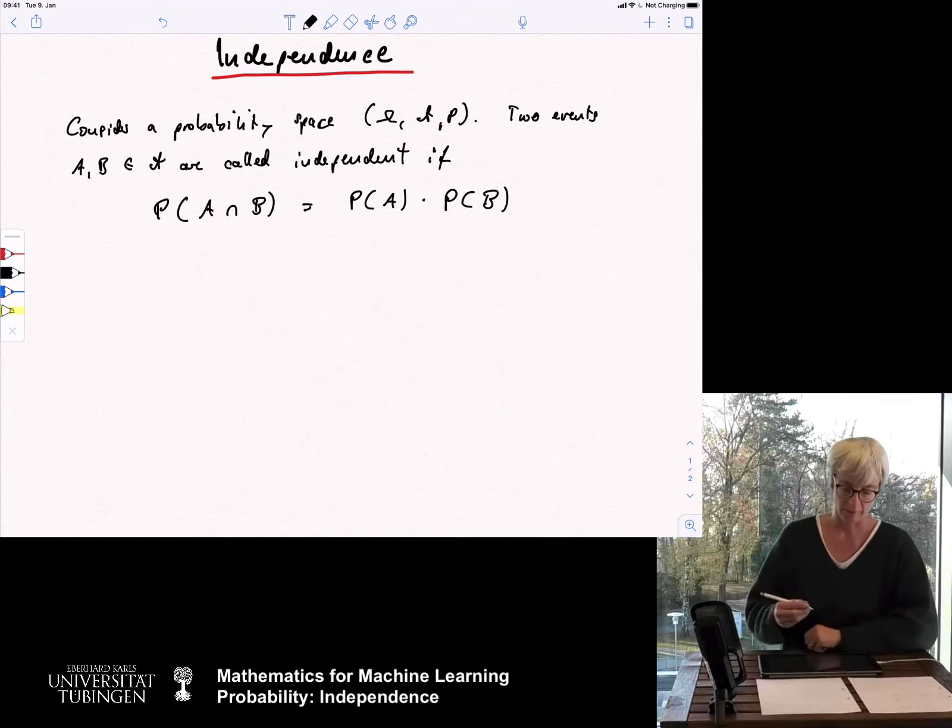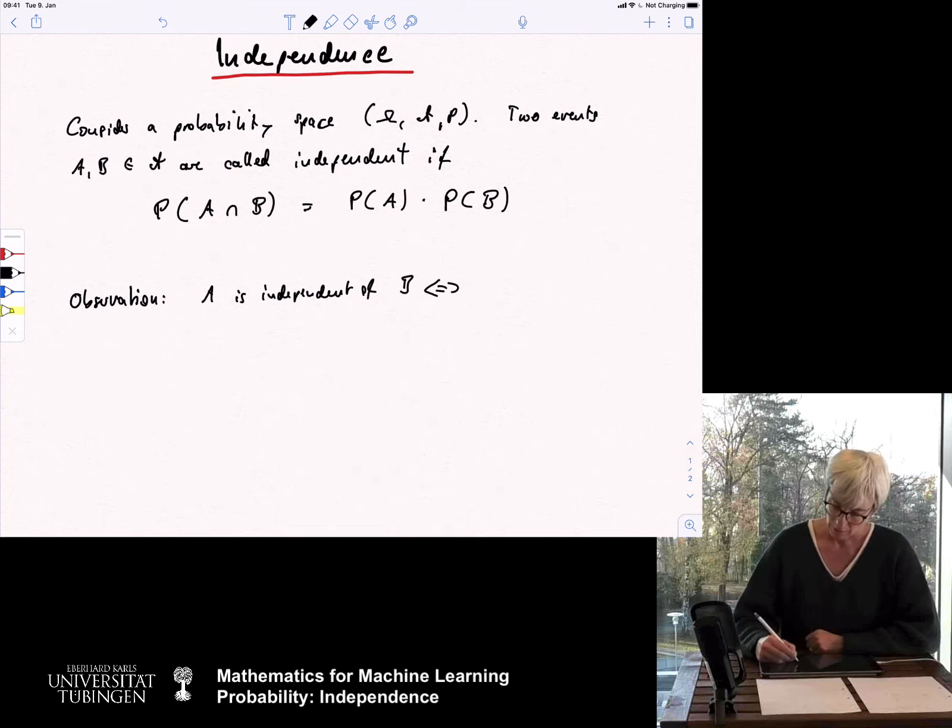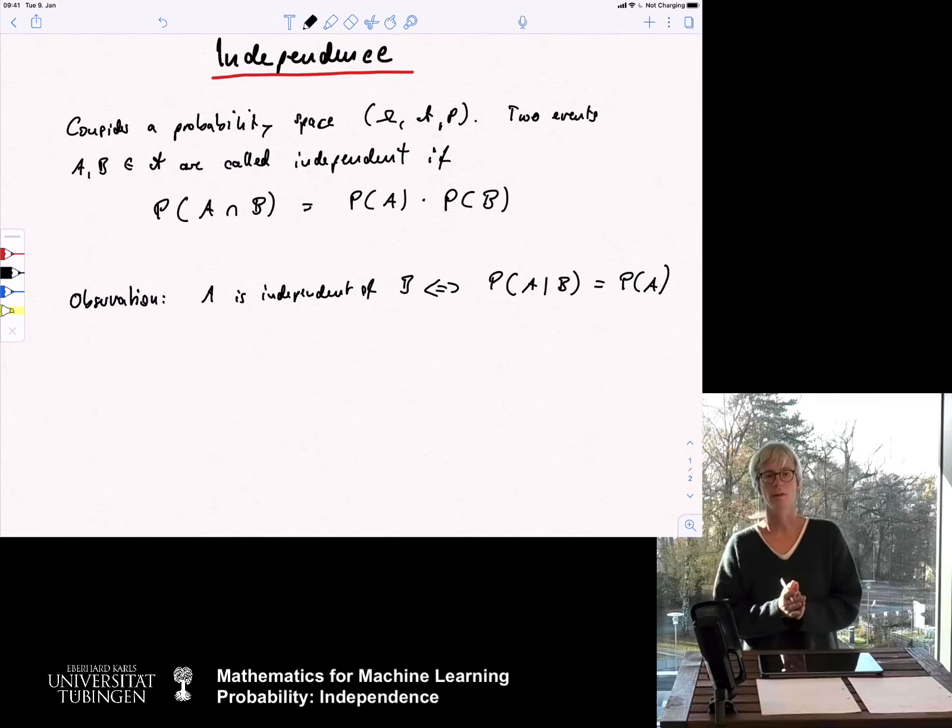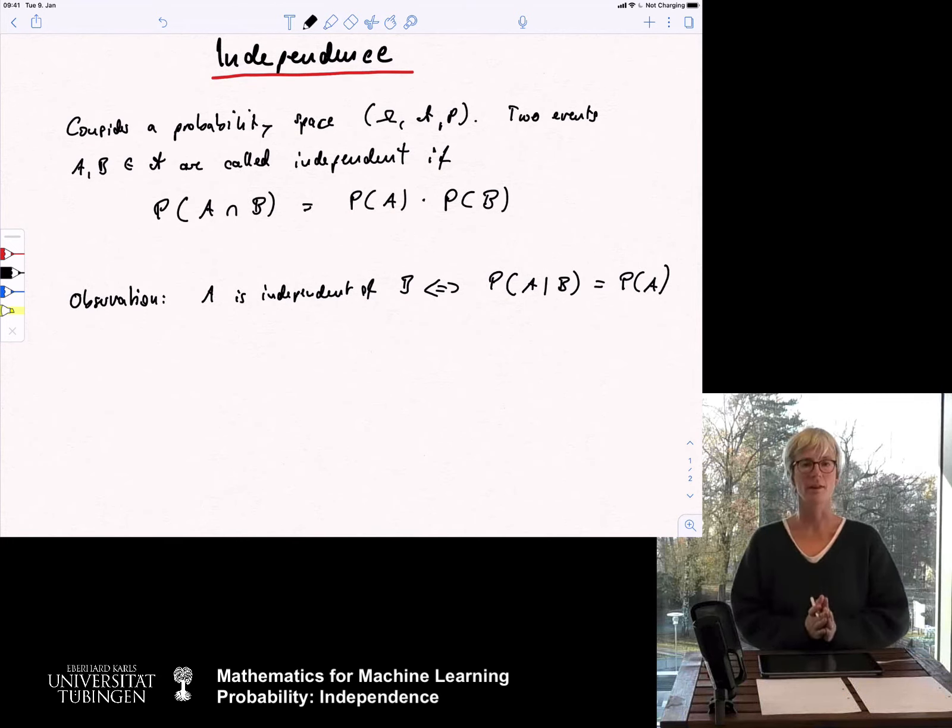Another way to see this is, observation, if a is independent of b, if and only if we compute the probability of a given b, then this is the same as the probability of a directly. So the probability that I get a two on my die conditioned on the fact that it's sunny outside doesn't depend on this fact whether it's sunny. It's just the probability that I have a two on my die. And this is what we call independent.